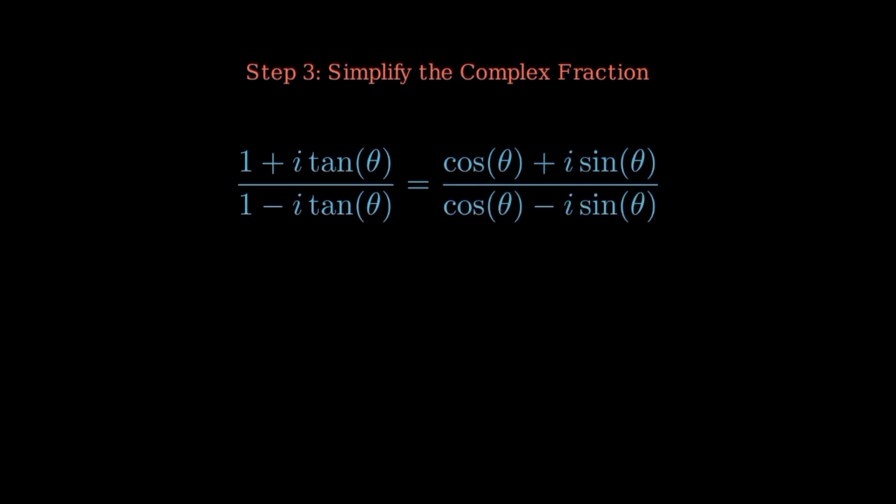Step 3. Simplify the complex fraction. Remember, tangent theta equals sine theta over cosine theta. So multiply numerator and denominator by cosine theta. This turns the fraction into cosine theta plus i sine theta over cosine theta minus i sine theta.